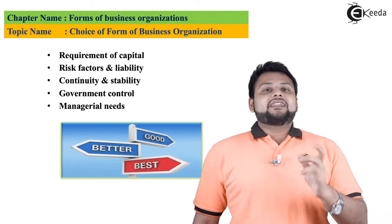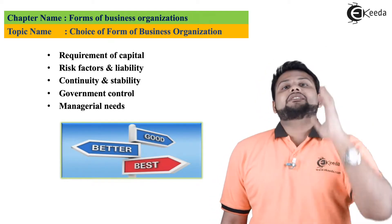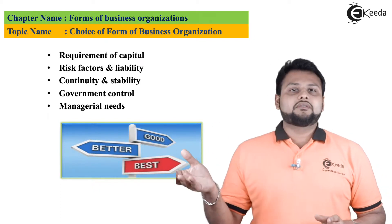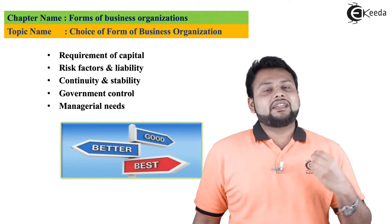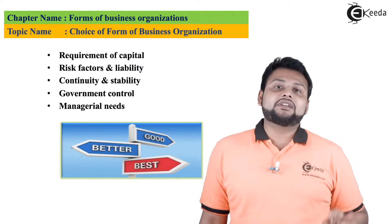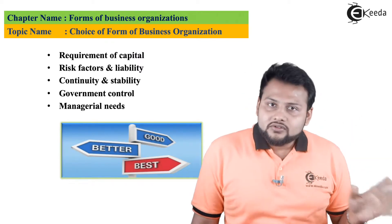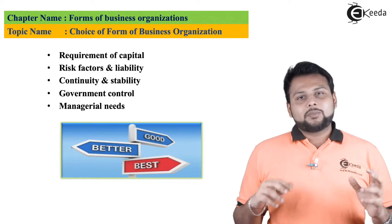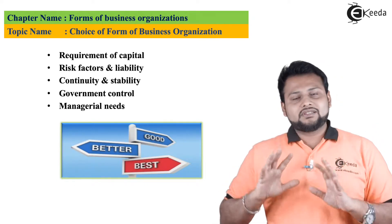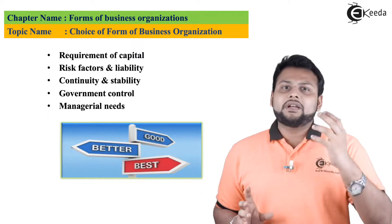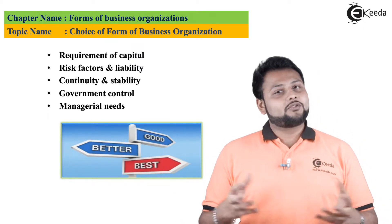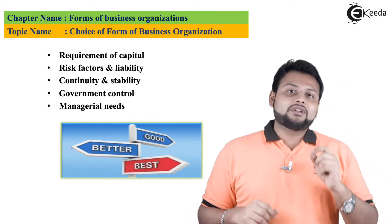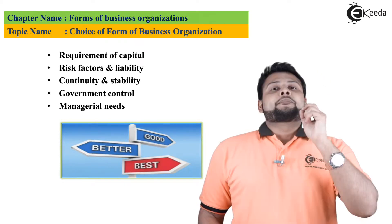The next point is continuity and stability. If you want a stable, long-running business, go for the company form of organization. If you want a more flexible arrangement, go for sole proprietorship or partnership. Based on these requirements, you can select the appropriate form of business organization.